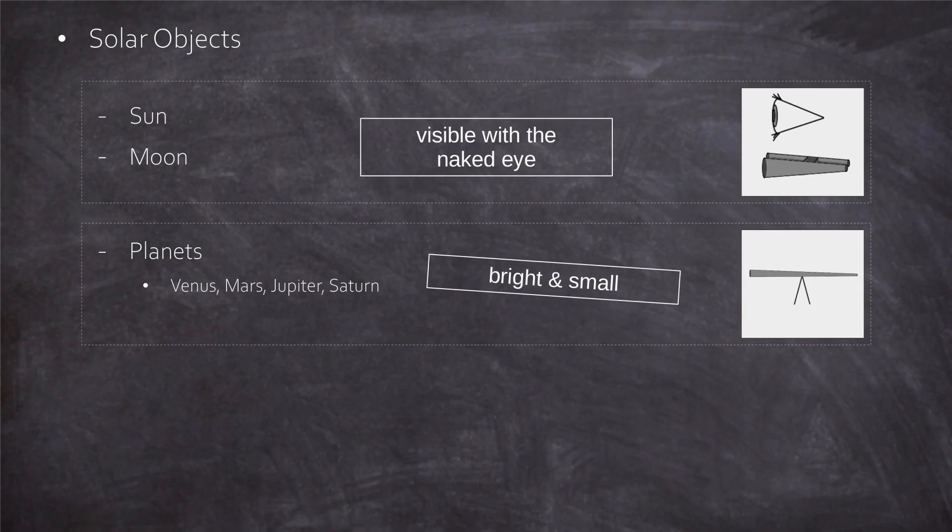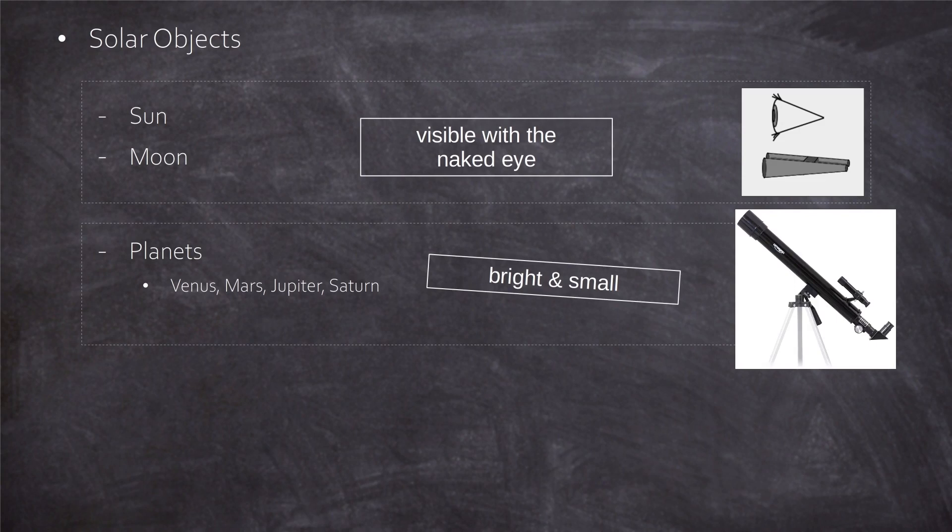To observe those tiny planets you need a very long scope. But because they are very bright compared to other stuff, you just need a very thin scope. No giant rocket launcher is needed for a short glimpse at the planets.